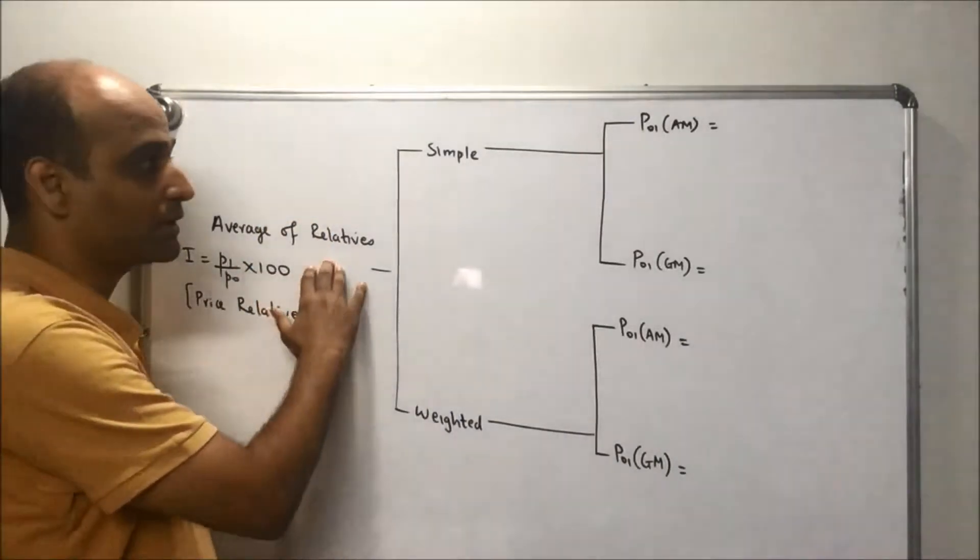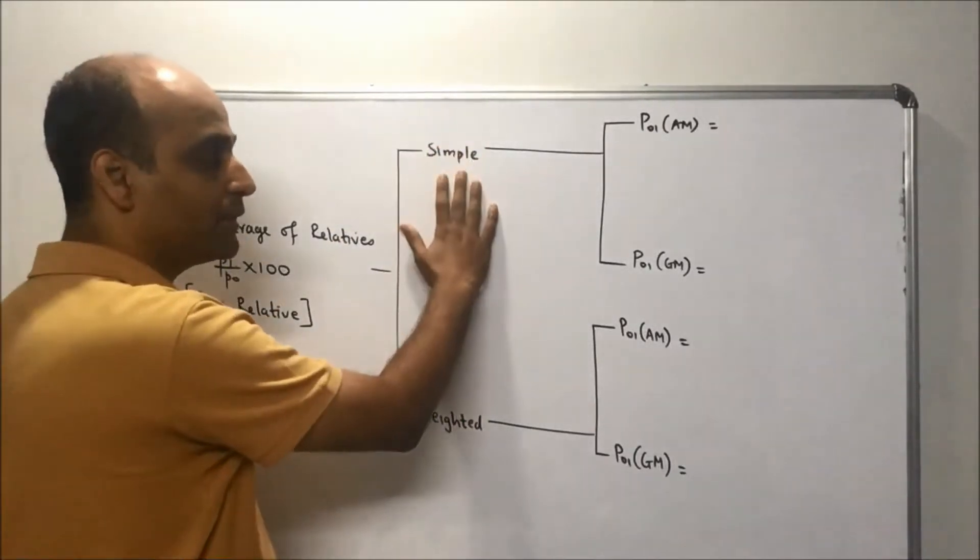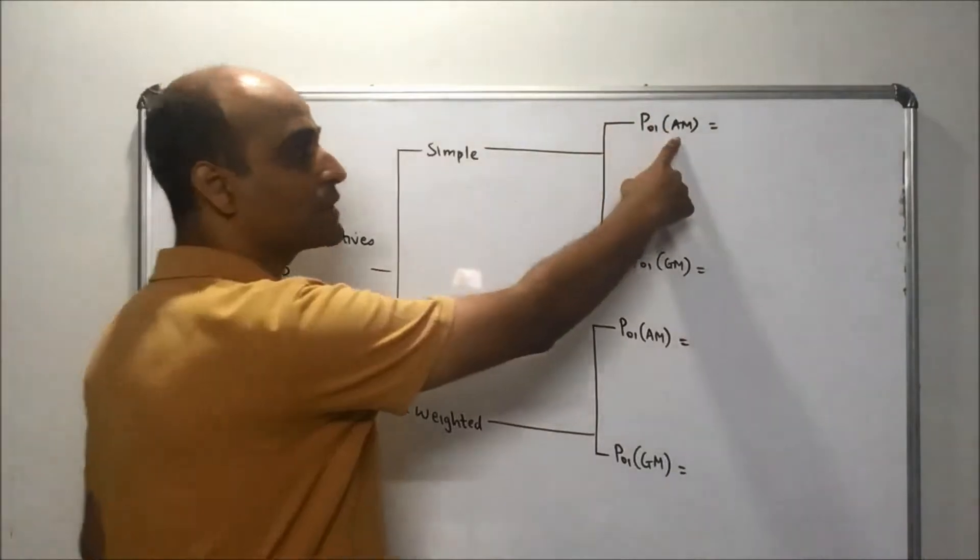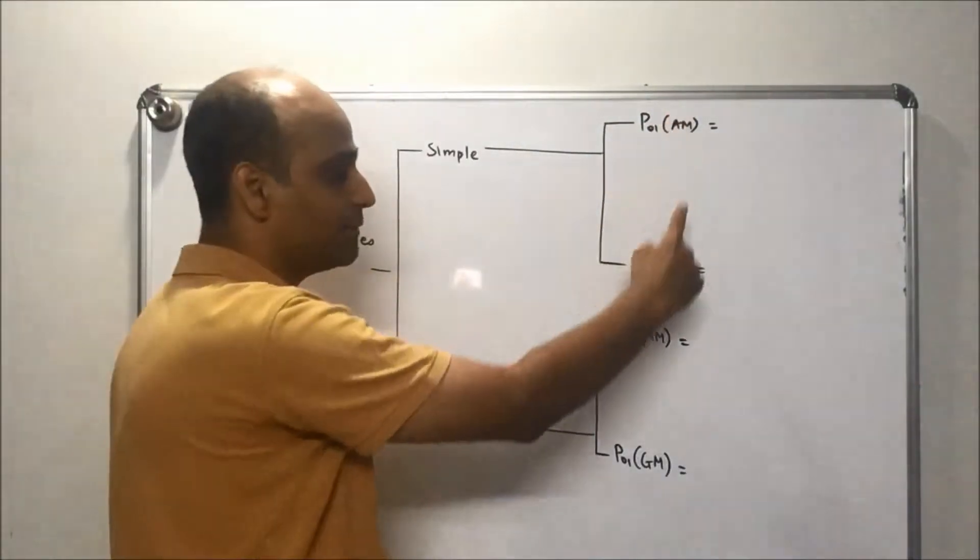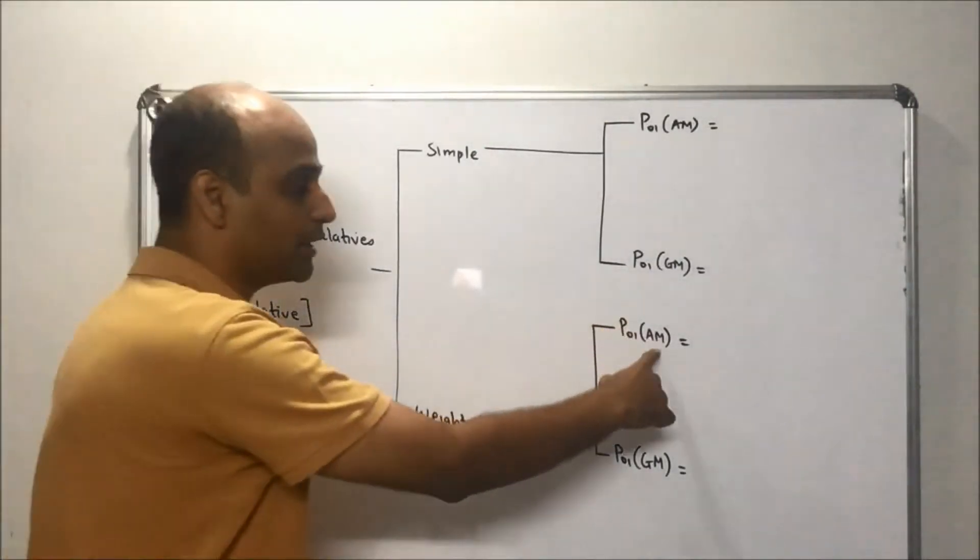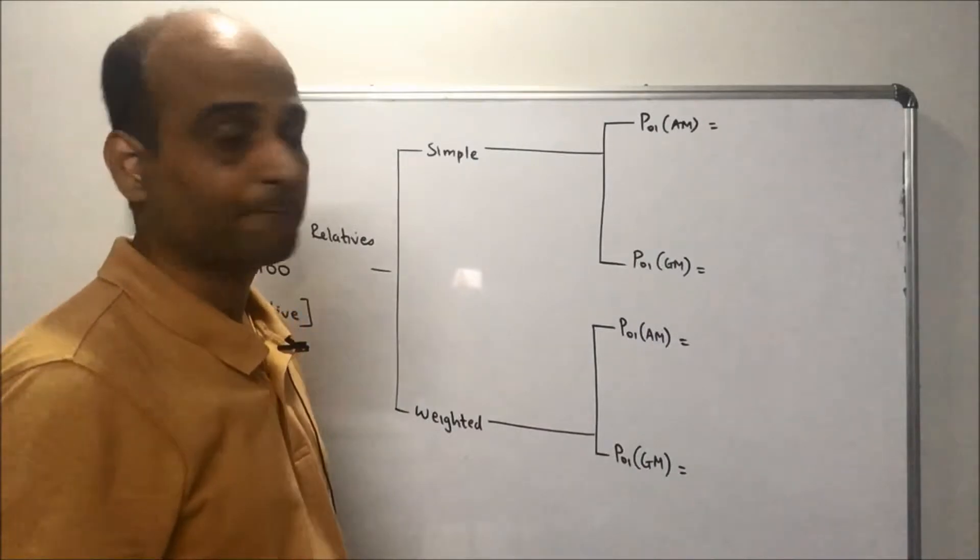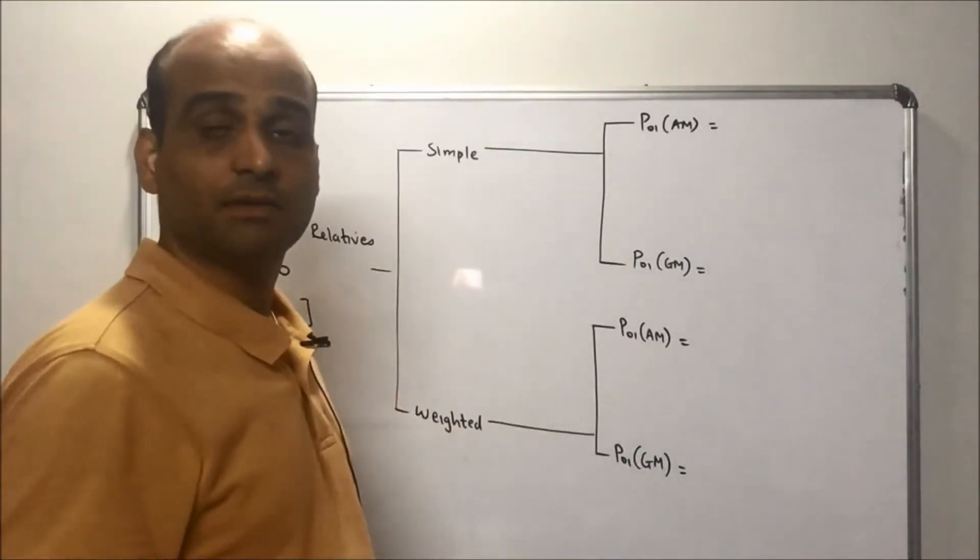Now under average of relatives method we have two methods: simple and weighted. Under simple you have simple using arithmetic mean and simple using geometric mean. Likewise, weighted using arithmetic mean and weighted using geometric mean.